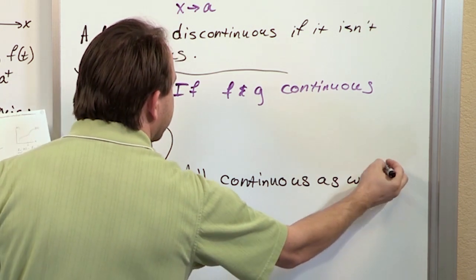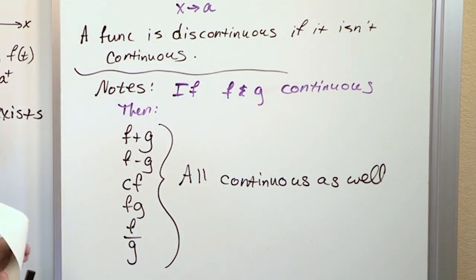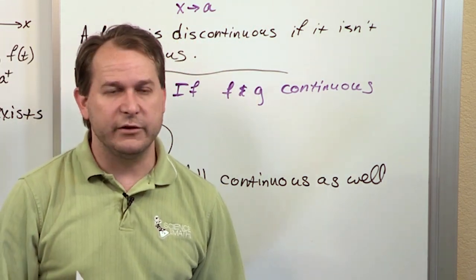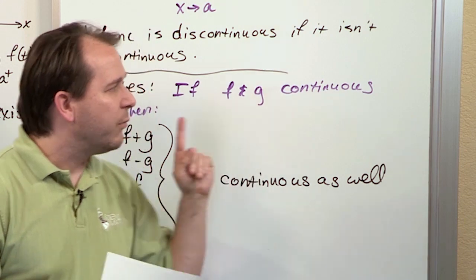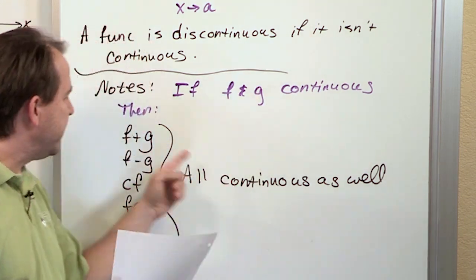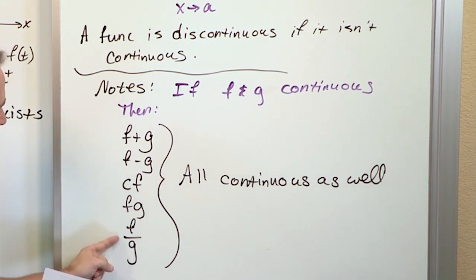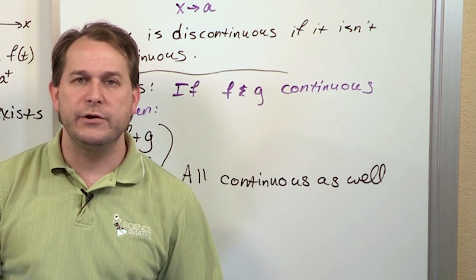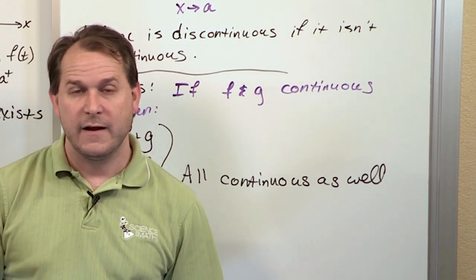That's actually really important because, as we've seen, finding limits is very easy to do if the function is continuous. Very easy to do. All you do is you plug in the value. And what we're saying is if you have two functions that you already know to be continuous, then you can either add them, subtract them, multiply them, divide them, or multiply them times a constant number, and the resulting function that you get from that is also continuous.